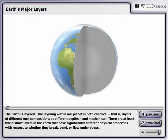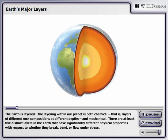The Earth is layered. The layering within our planet is both chemical—that is, layers of different rock compositions at different depths—and mechanical. There are at least five distinct layers in the Earth that have significantly different physical properties with respect to whether they break, bend, or flow under stress.